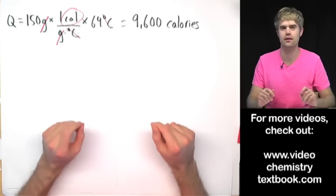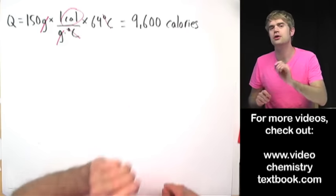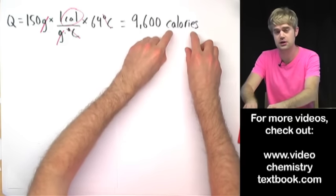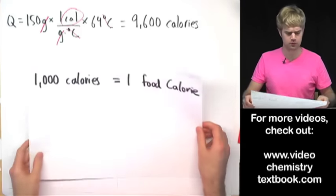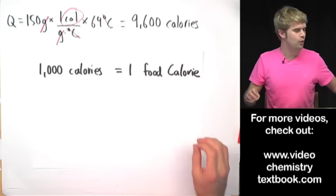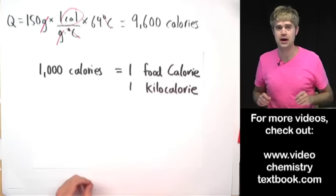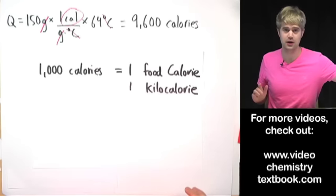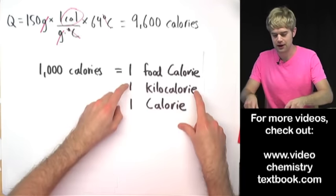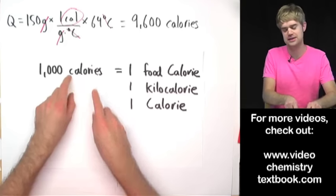We're not quite done, because these calories are a different kind than the calories in food. There are a thousand of these small calories in one food calorie. We can also call a food calorie a kilocalorie — that makes sense because kilo means a thousand. To make things a bit confusing: if you spell calorie with an uppercase C, you're talking about kilocalories or food calories, which means an uppercase-C Calorie contains a thousand lowercase-c calories.